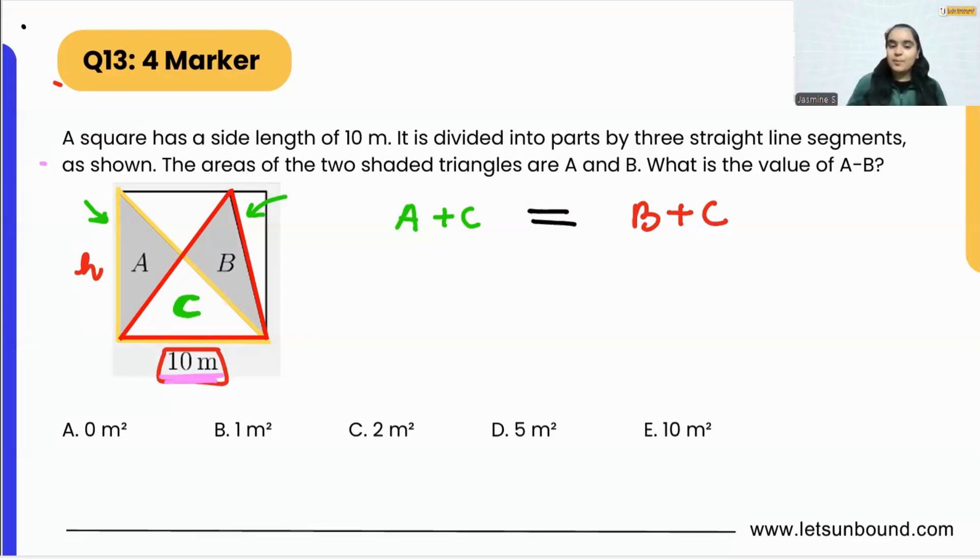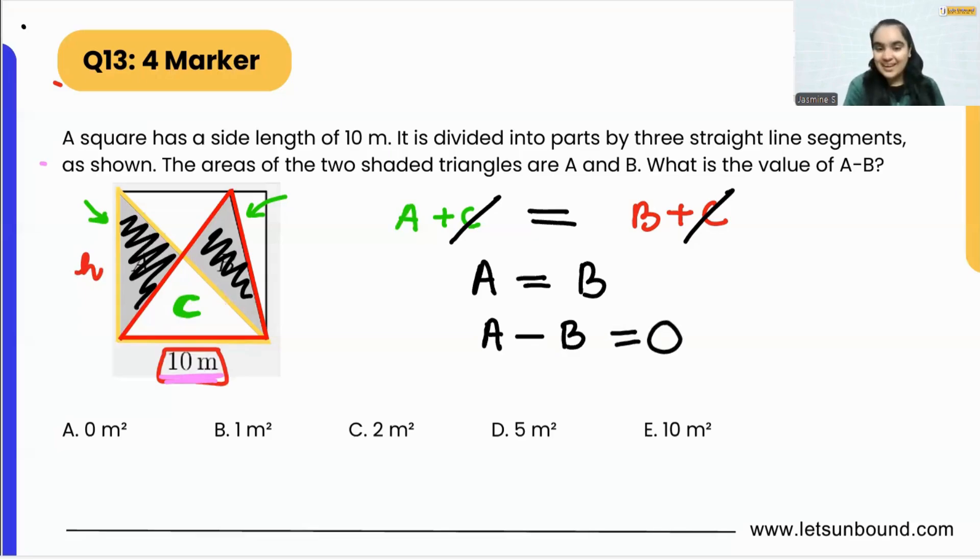From here we can cross out C and C. We can say the area of B is the same as area of A. A is equal to B. Now if the area of both the shaded parts is the same, the difference of A and B will be zero. A minus B is going to be zero.